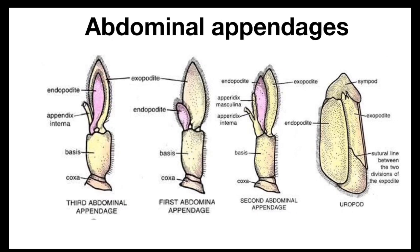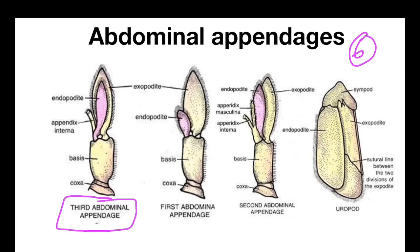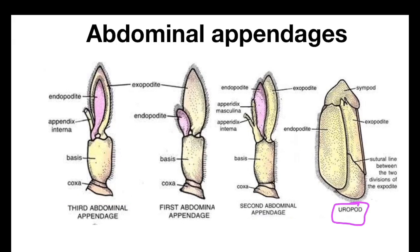Abdominal appendages — there are six pairs of abdominal appendages present. The first five pairs of abdominal appendages are called swimmerets or pleopods, and the last pair is called uropods. The typical abdominal appendage is the third abdominal appendage. The third, fourth, and fifth have a typical structure with a ring-like coxa and a cylindrical basis.